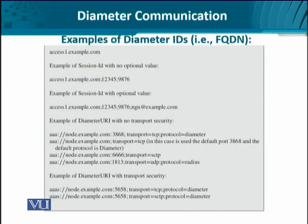Let's look at some examples of Diameter IDs. We can see the fully qualified domain name as access1.example.com. If it does not have any options, it would simply have the URL or FQDN and the 32-bit higher-order and lower-order information. Once it has options, it can include an additional fully qualified domain name in case the primary ID of the Diameter client and server is not working, in which case an alternate ID is provided.